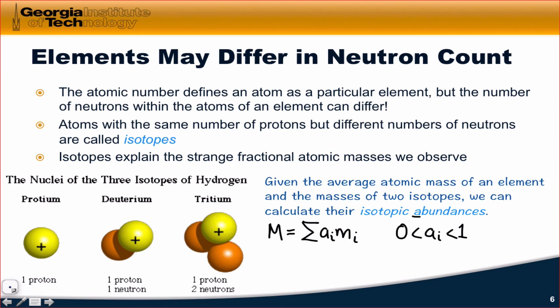This equation shows us that if we know the average atomic mass and the masses of two isotopes, well, then we also know that the sum of the two abundances must be equal to one. And so we can calculate the two a i's from the given m sub i's and the given average atomic mass.